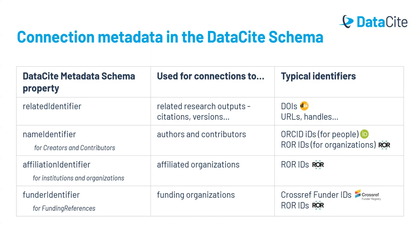Another place where organizations can be included is the funder identifier, where you can make reference to funding organizations. The Crossref funder registry has been a provider of identifiers for funders for some time and is quite heavily used. But you can alternatively provide a ROR ID here, which may make sense for repositories that are already using ROR in other fields.